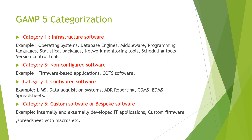Now let's discuss GAMP 5 categorization. GAMP 5 consists of four categories — not five — because Category 2 was removed. Category 1 is infrastructure software, which includes the operating system, database engines, middleware, programming languages, and antivirus software.